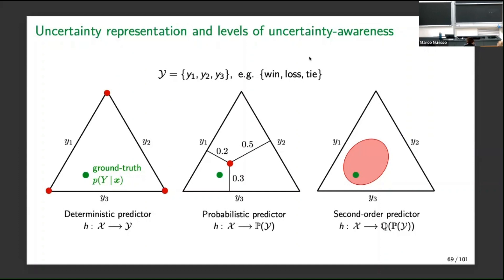This is what a second-order predictor does: the prediction is not just a probability distribution or vector, but something more expressive — like a set of probability distributions. A set of probability distributions is called a credal set in the literature, or a second-order distribution, a distribution over distributions. This allows the learner to represent epistemic uncertainty.